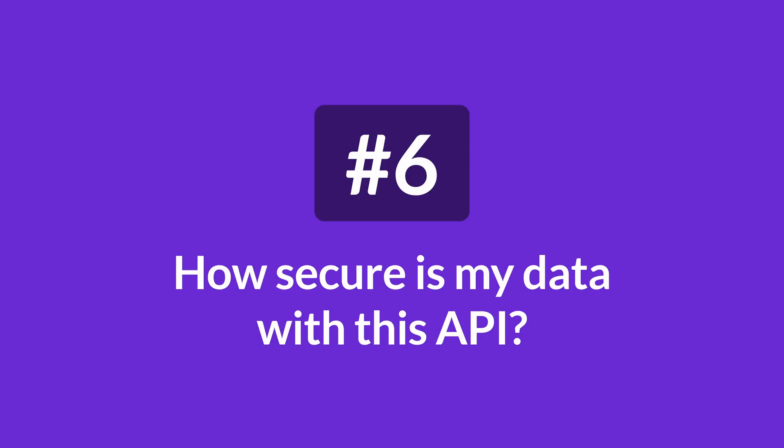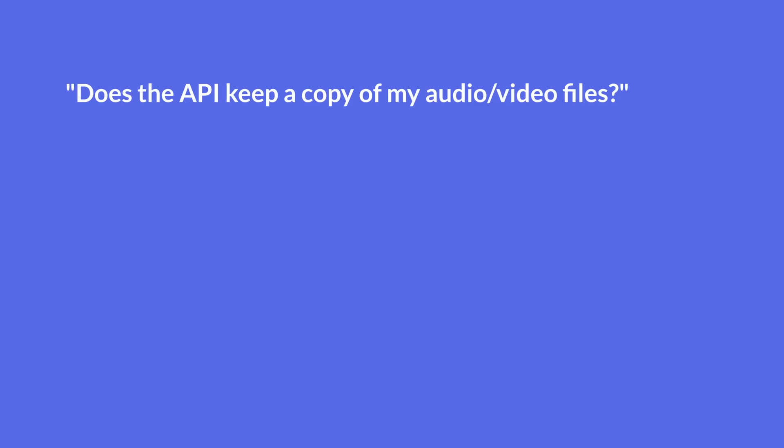Number six: how secure is my data with this API? Data security is one of the main considerations when integrating a new API into your tech stack. Make sure the API you choose will not use your data in any way other than intended. Key questions to ask are: does the API keep a copy of my audio or video files to improve its model, and does the API keep a copy of my transcription files? If you have sensitive data or personal information, including it to train a model could be problematic, as the model's learnings may embed that sensitive information.